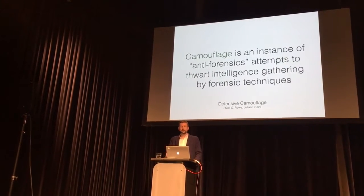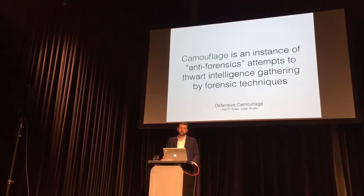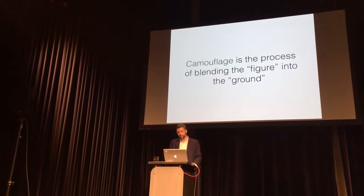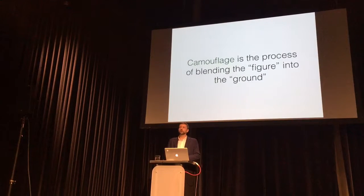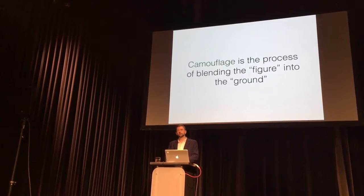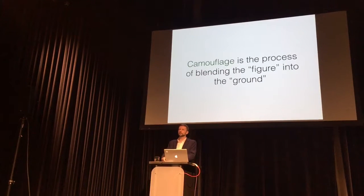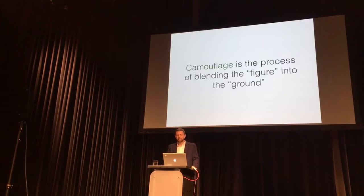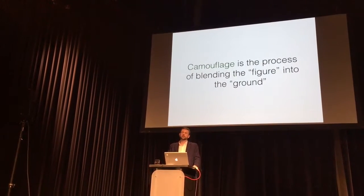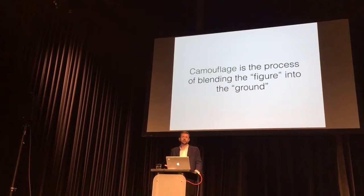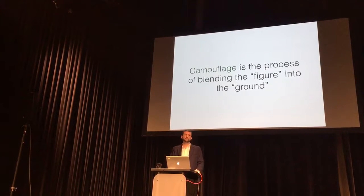Camouflage, in this sense, is an instance of anti-forensics — attempts to thwart intelligence gathering by forensic techniques. You can also think about camouflage as having two very basic requirements: the figure and the ground. The figure is only the figure if a ground is there. The M81 woodland pattern only works when there's a jungle in the background. When you see somebody wearing it in an urban area, it's missing the second half — it's missing the ground.